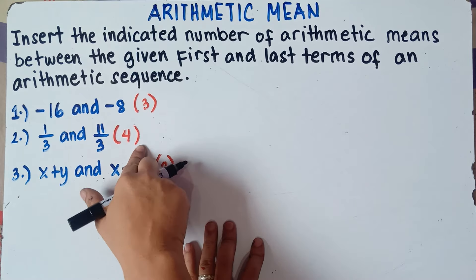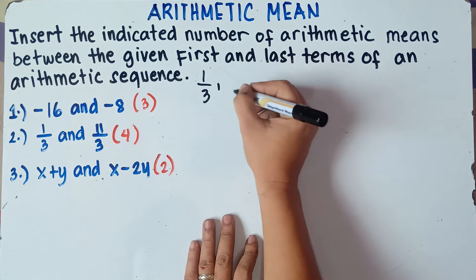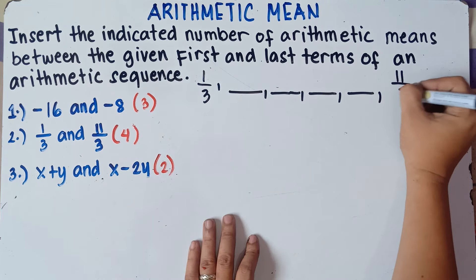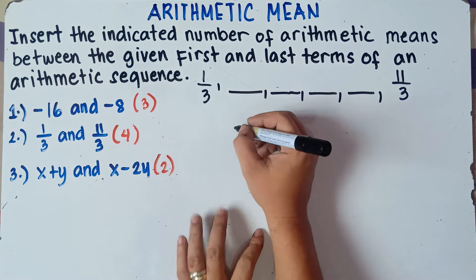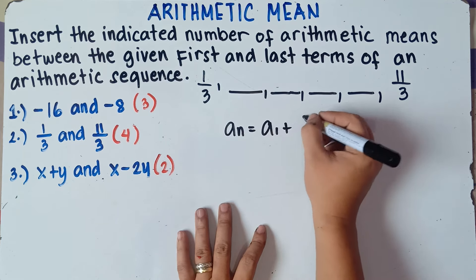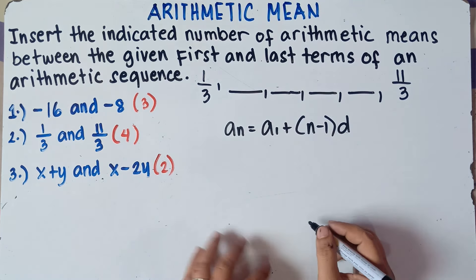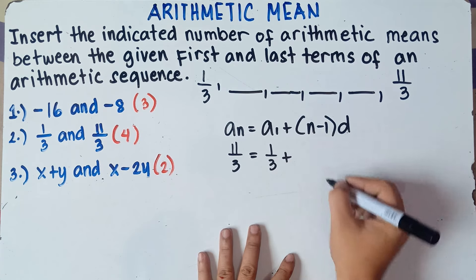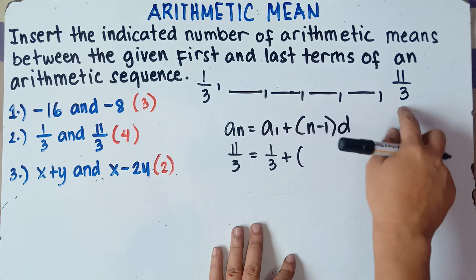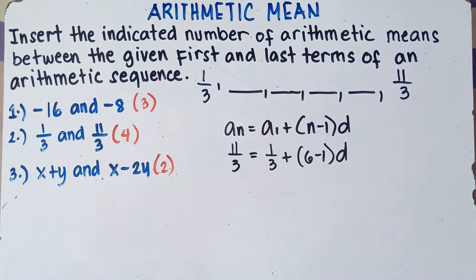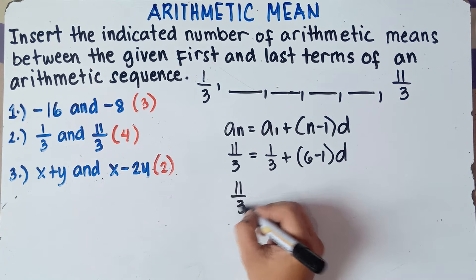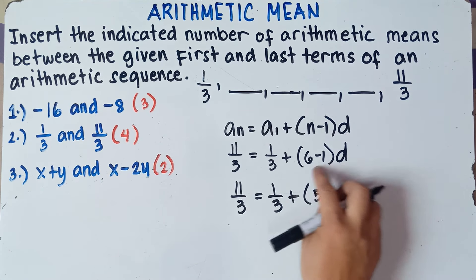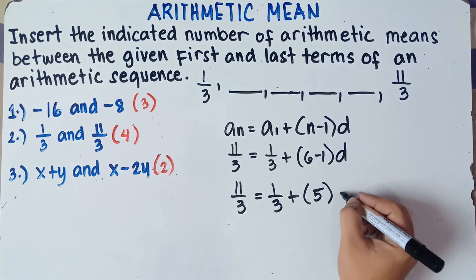For example 2, we're going to insert 4 arithmetic means between 1 over 3 and 11 over 3. Using the formula: a sub n equals the first term plus quantity n minus 1 times the common difference. The last term is 11 over 3, the first term is 1 third. The number of terms is 6, so 6 minus 1 is 5, times d.